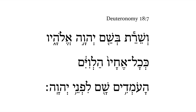Deuteronomy 18:7. We get here a Vav that introduces the hypothesis of the introductory conditional key. And if he enters, this Levite, then he shall serve. We have a Piel perfect here — third masculine singular.